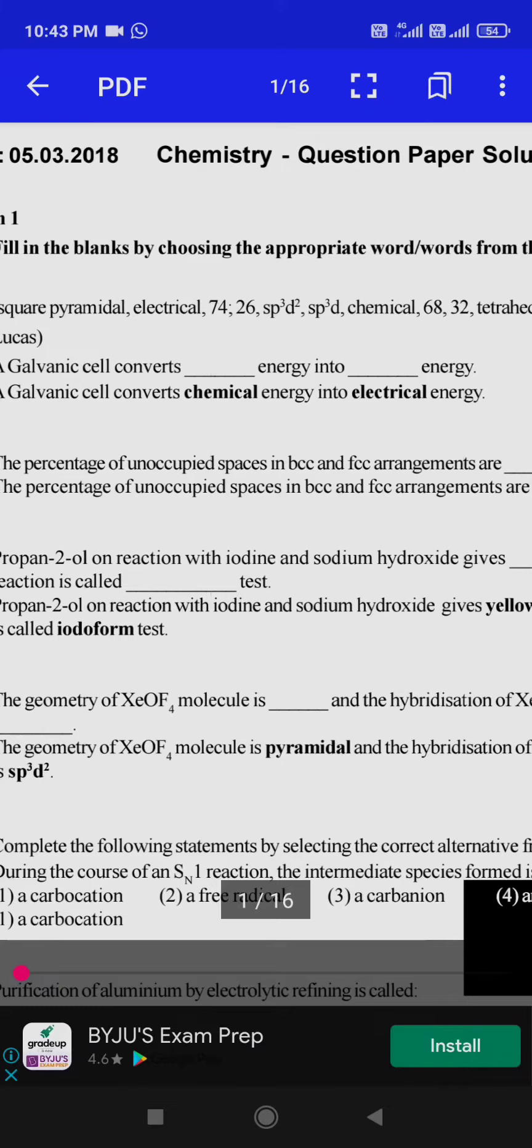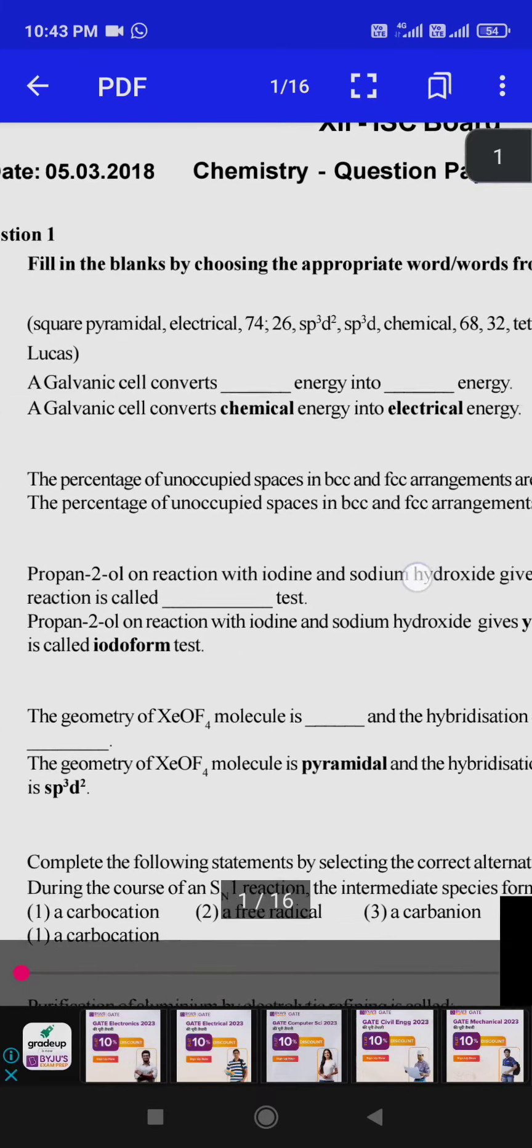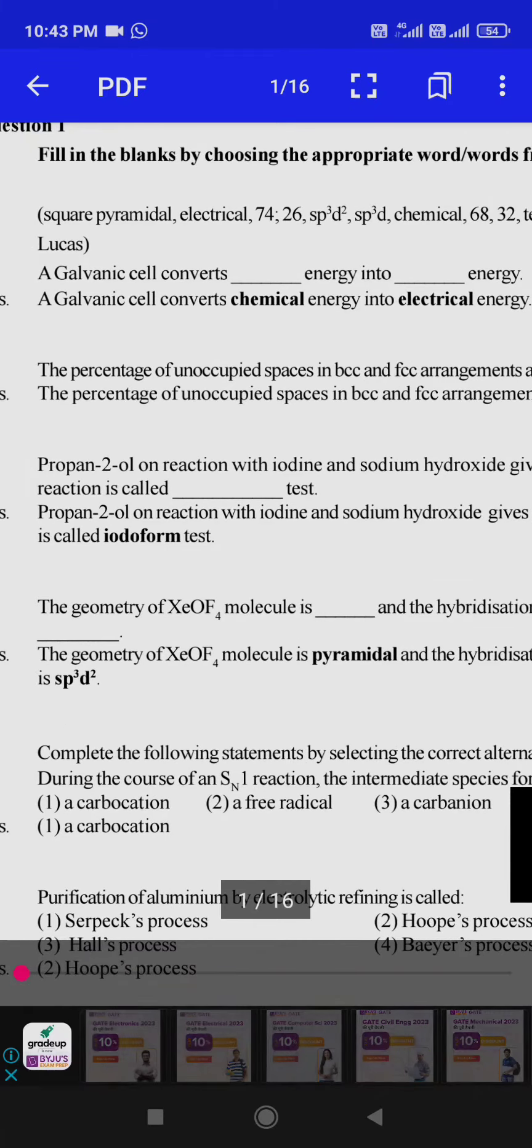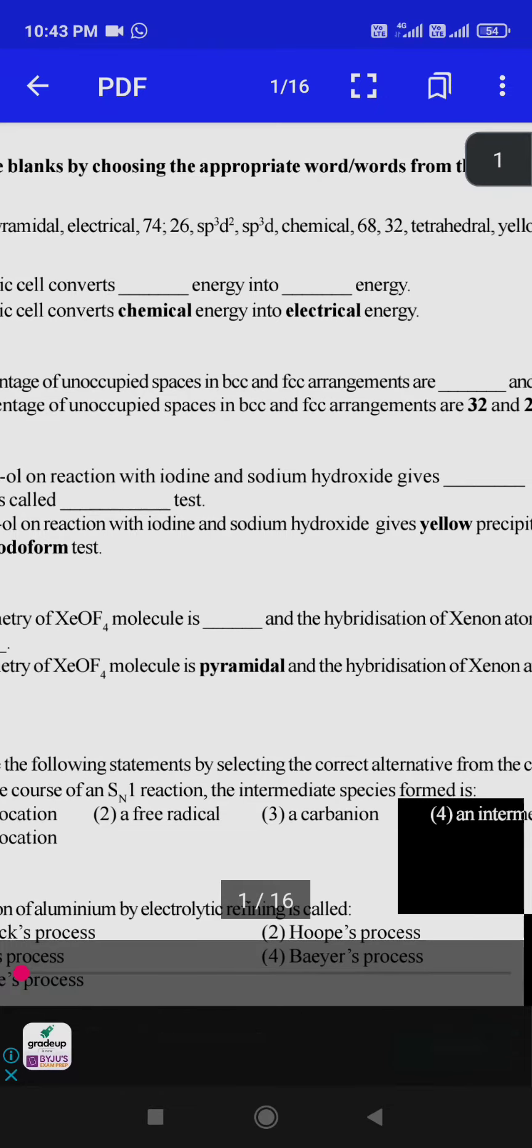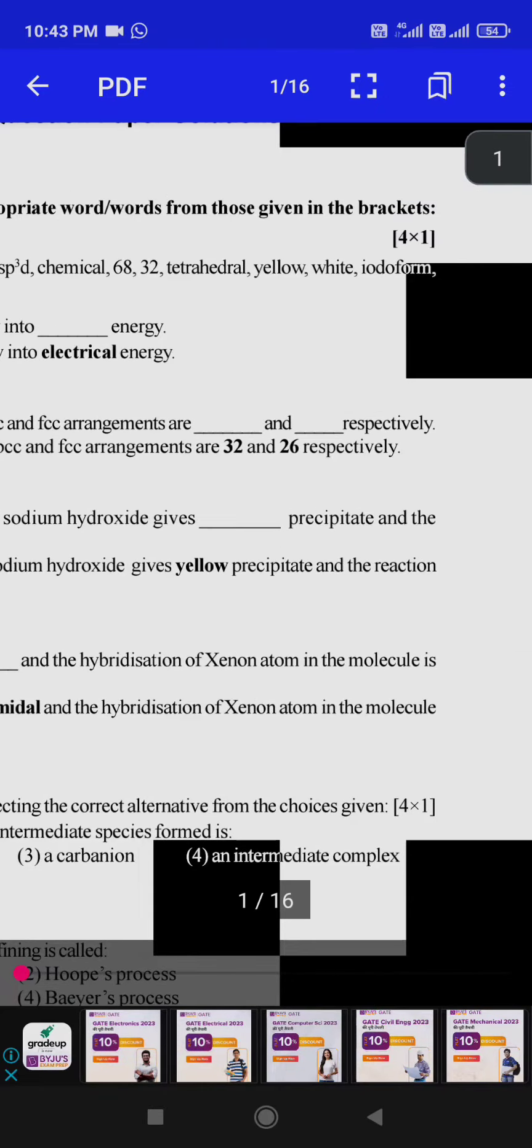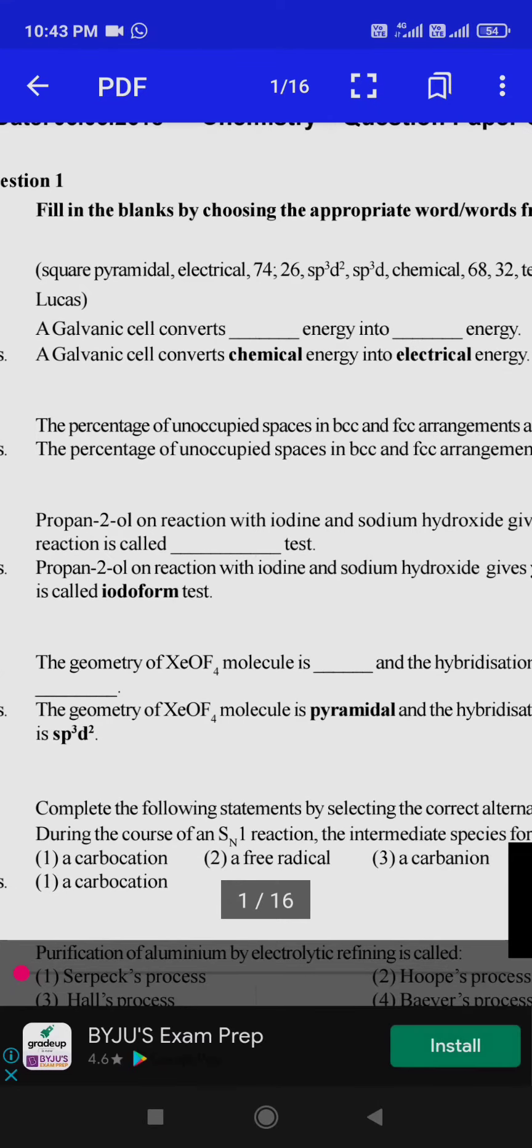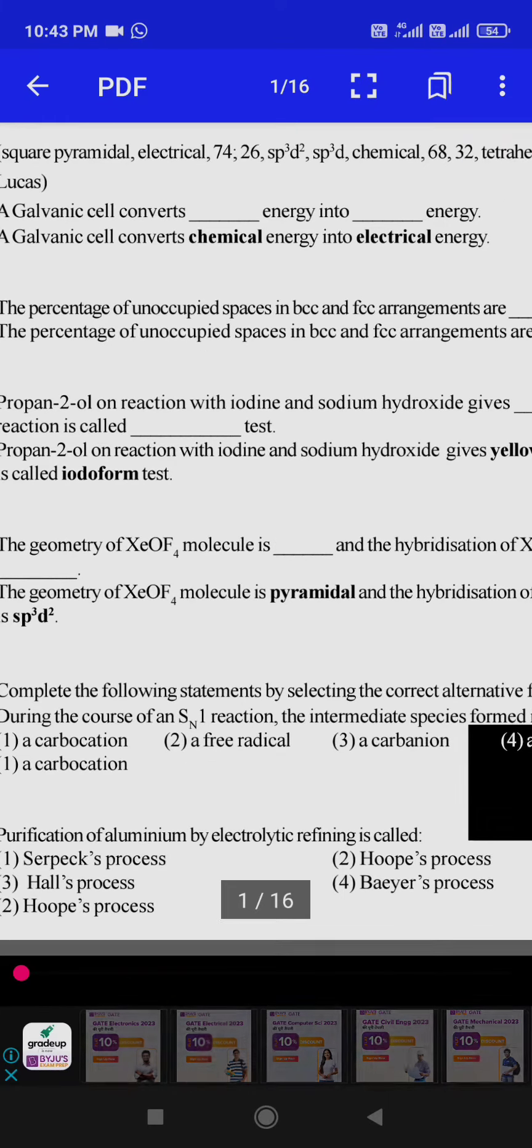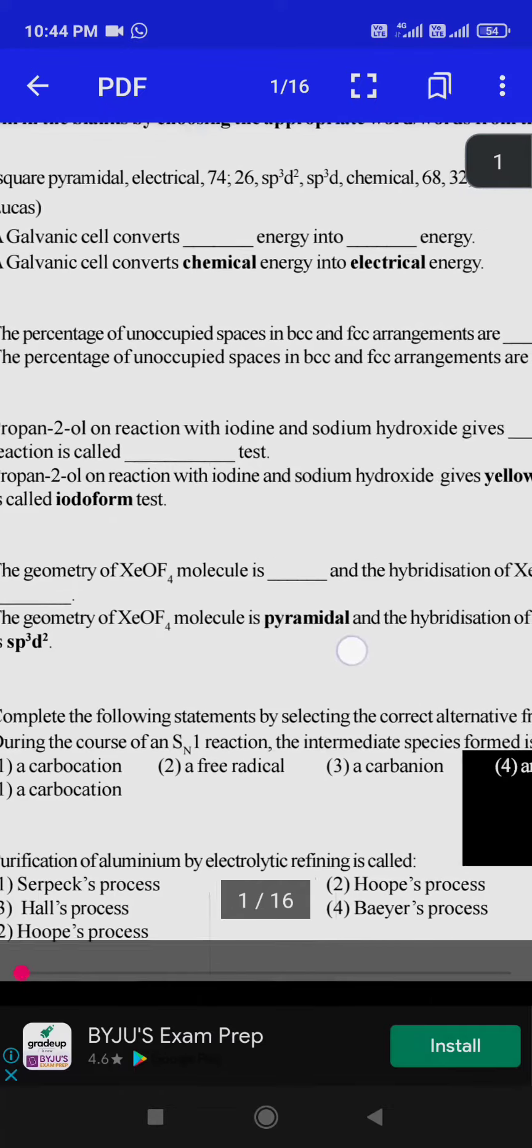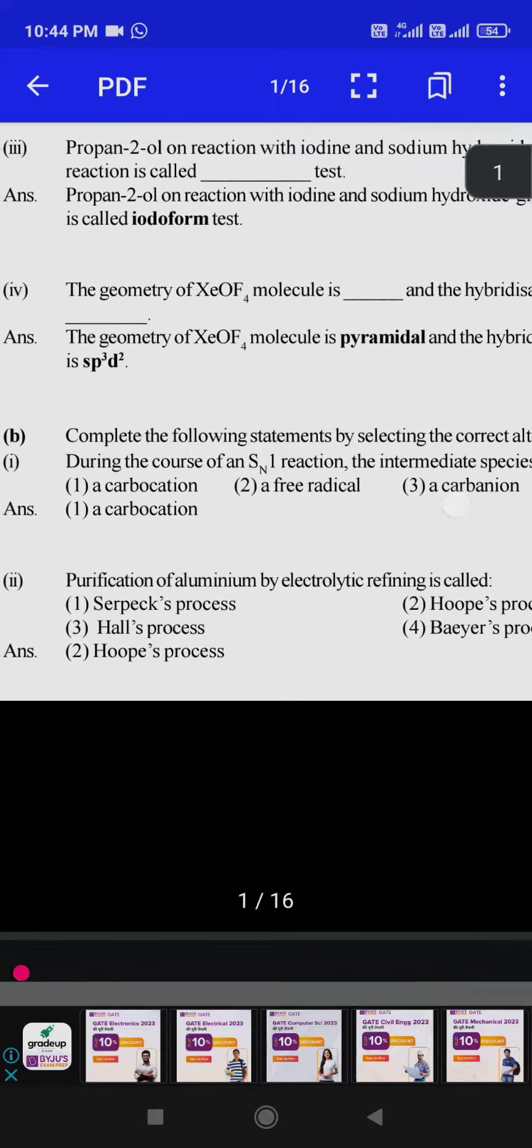The second question is from solid state, which is not in your syllabus. Propane reaction with iodine and sodium hydroxide gives a yellow precipitate. This is a question from phenols, alcohols, and ethers, related to the iodoform test. The geometry of XeOF4 is also from p-block; we will not do that here.